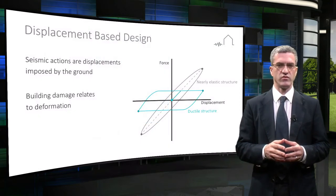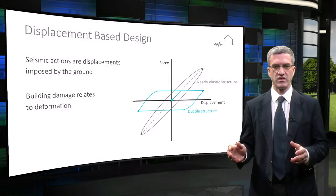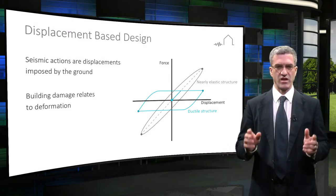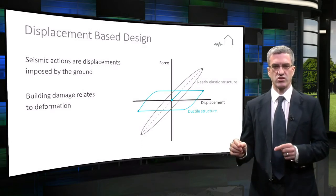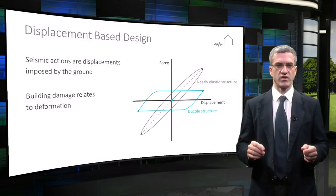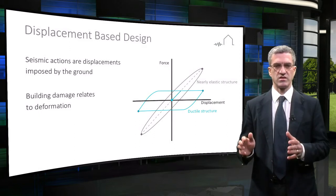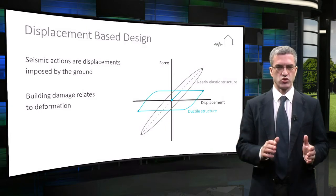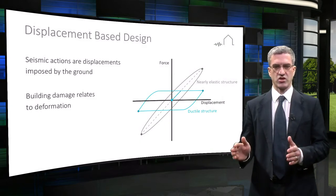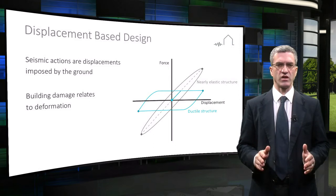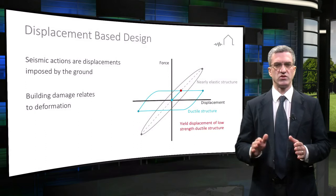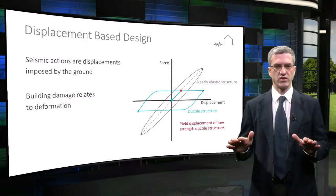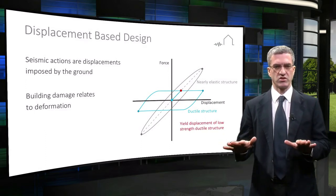Displacement-based design grew from the observation that fundamentally, seismic actions are dynamic displacements imposed by the ground, not imposed dynamic forces that act on structures. A low-strength ductile structure will experience the same maximum deformations as a stronger, nearly elastic structure. The low-strength ductile structure yields at a smaller displacement, and it will continue to support the weight of a building during ongoing deformation demands.